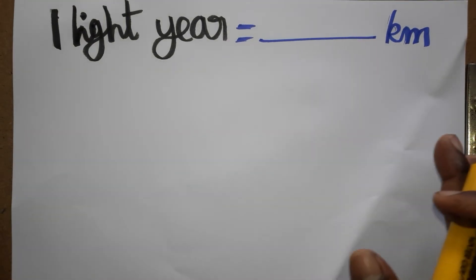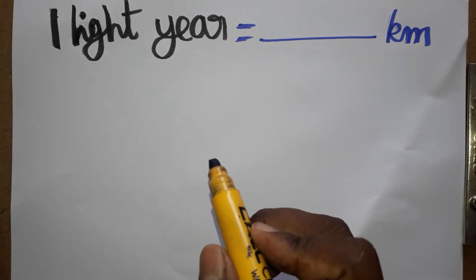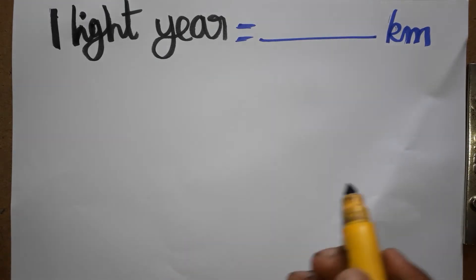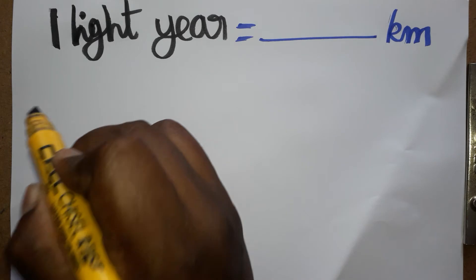Student, today we are going to learn one light year is equal to dash kilometer. One light year is representing as the distance light travels in one year. So the light year value we are going to see in kilometer. First we'll see one light year in meter.